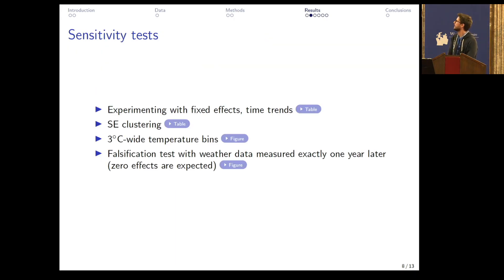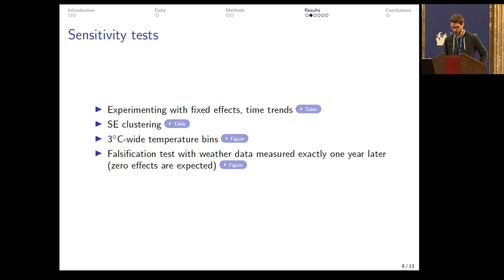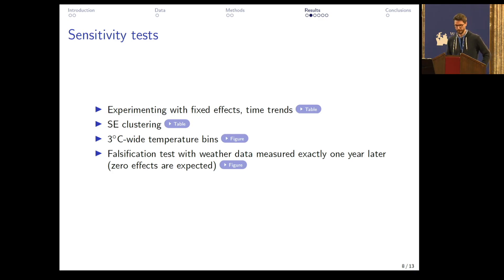We tested the sensitivity of these results by alternative model specifications. We experimented with fixed effects, time trends, and the calculation of standard error clustering, introducing spatial autocorrelation. We used narrower temperature categories, and none of these changes influenced the conclusion. So the results are pretty robust. We also have a falsification test with future weather data, and we have zero effects there, as expected.